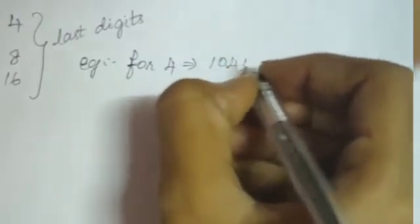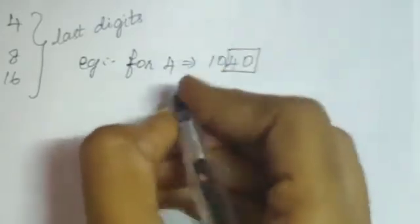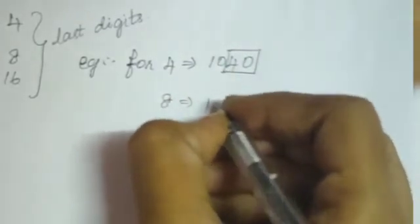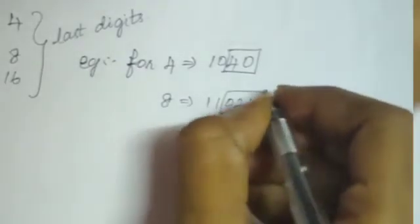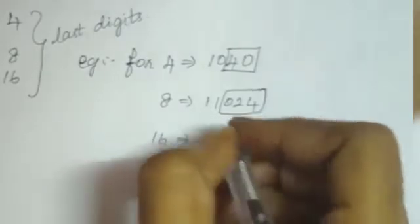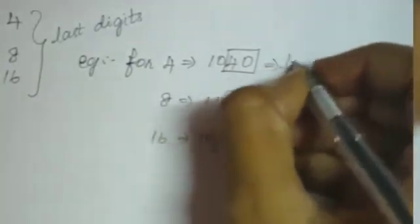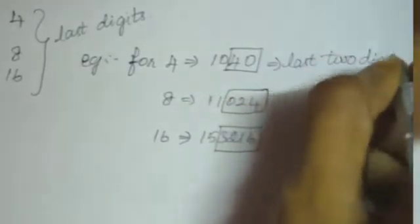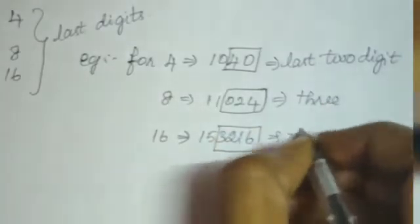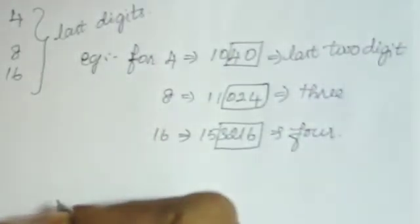Next combo: 4, 8, and 16. For these, check the last digits. For 4, take the last 2 digits. If they are divisible by 4, then the number is divisible by 4. For 8, last 3 digits should be divisible by 8. And for 16, last 4 digits should be divisible by 16.